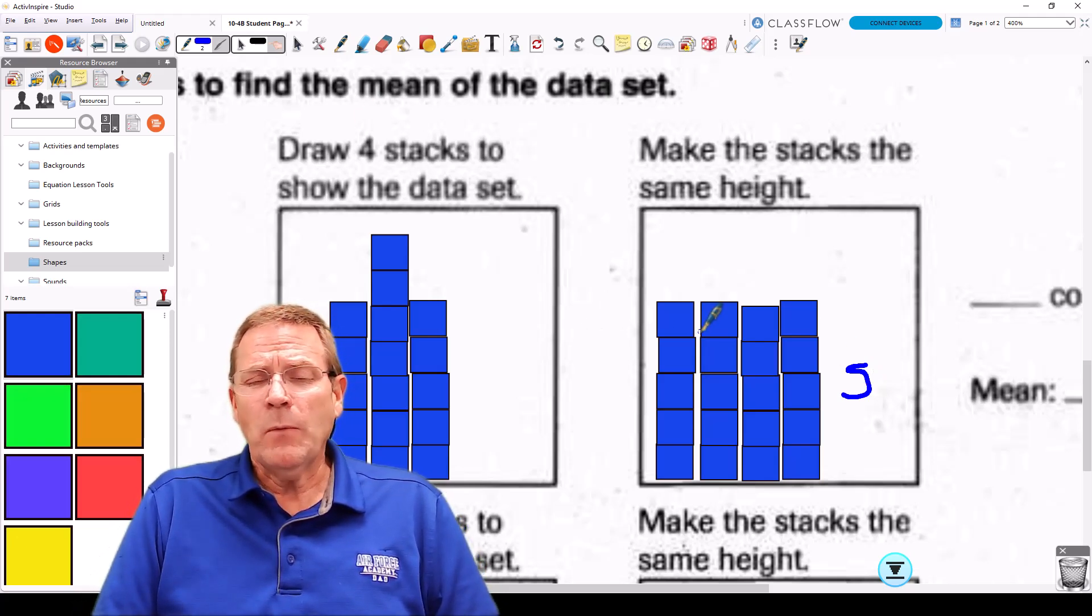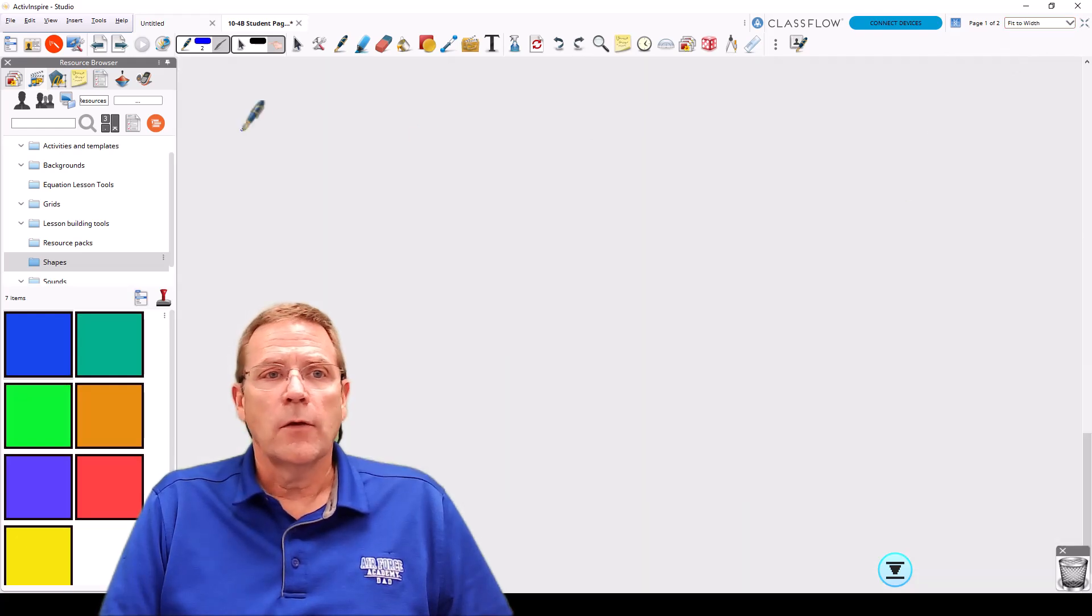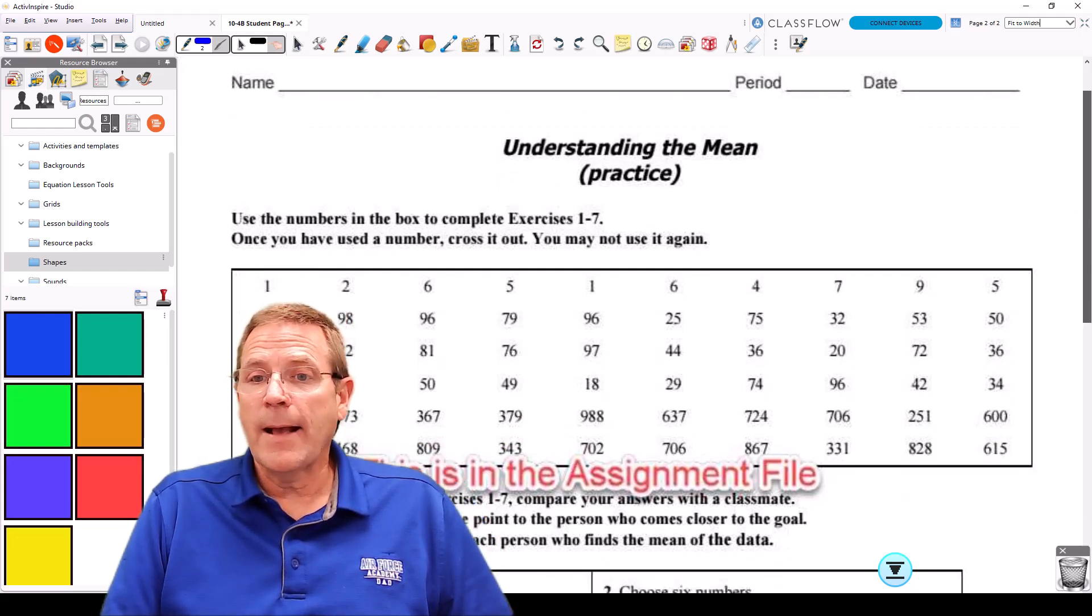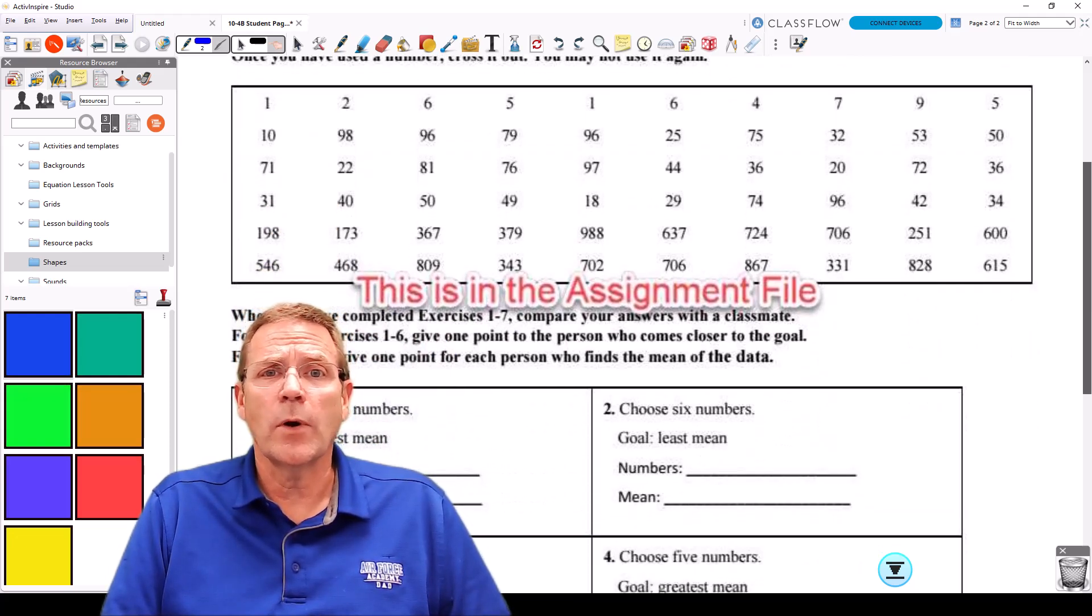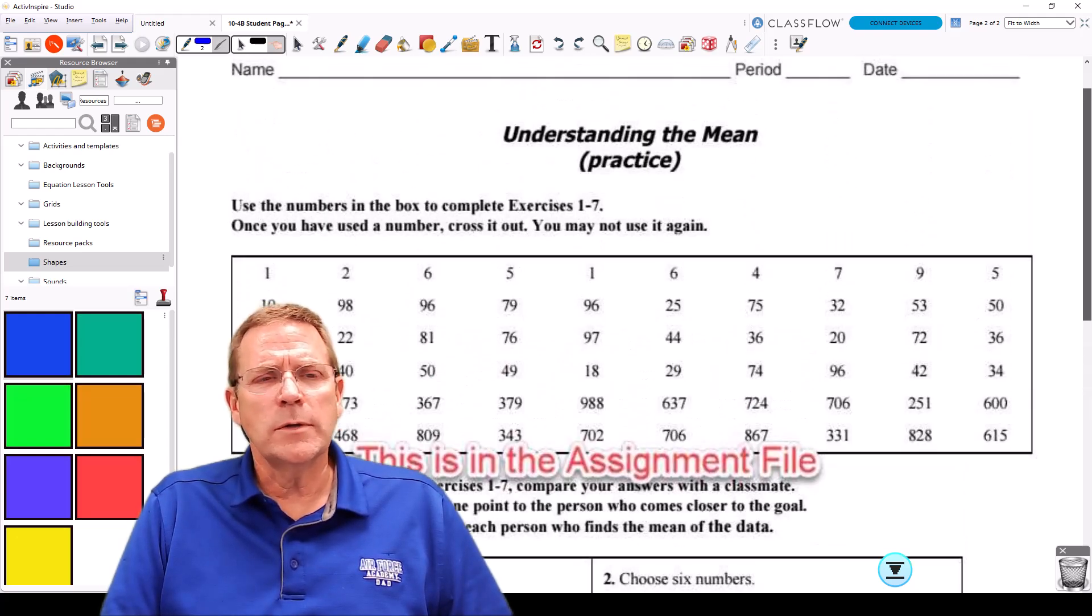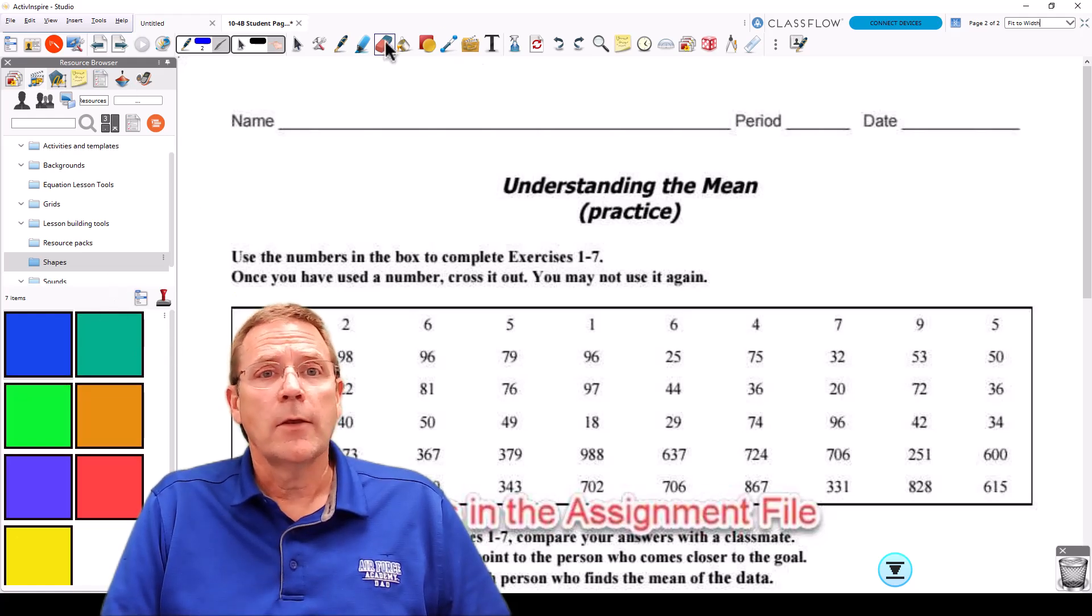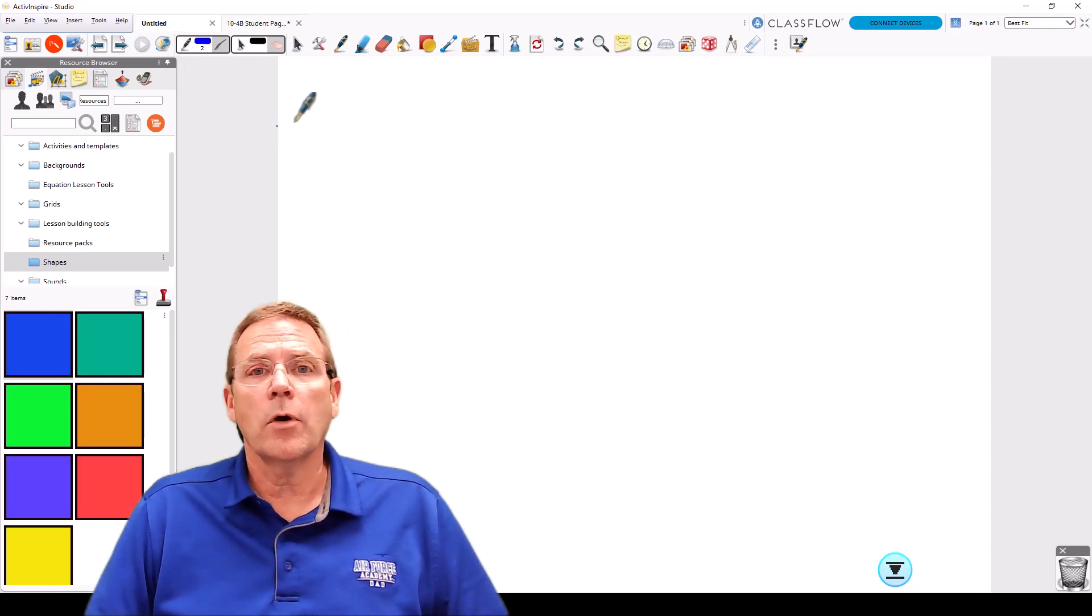Now that works okay for these numbers, but let's just take a real quick preview of some of the numbers you're going to have for your homework tonight. So we're going to take and go to the next page and look at these numbers. Those numbers are going to be absolutely brutal. Do you really want to stack 828 little squares? I don't think so. So what we're going to do instead now is we're going to take and learn how to actually solve this using math. So I'm going to jump back to the previous page and make a new page for us. And on that new page, we're going to work those numbers.